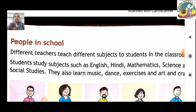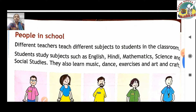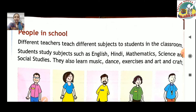People in school — school mein kaun se people hote hain, woh ab hum dekhenge. Different teachers teach different subjects to students in the classroom. Students study subjects such as English, Hindi, Mathematics, Science, and Social Studies — kaun se subjects padhaaye jaate hain: English, Hindi, Science, Mathematics, and Social Studies.